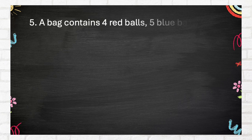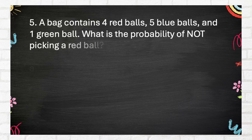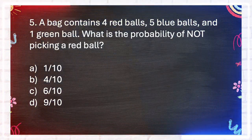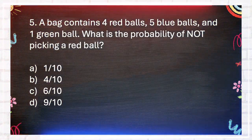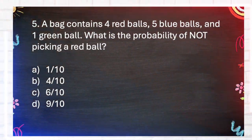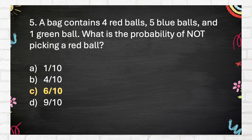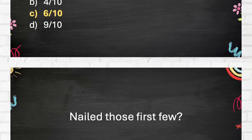Number 5. A bag contains 4 red balls, 5 blue balls, and 1 green ball. What is the probability of not picking a red ball? A. 1 tenth. B. 4 tenths. C. 6 tenths. D. 9 tenths. The correct answer is C, 6 tenths. Nailed those first few!